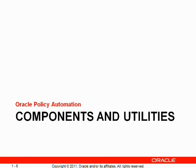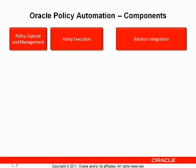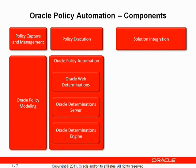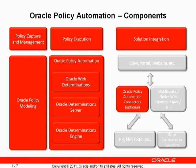Now we'll take a closer look at Oracle Policy Automation and its components and utilities. Oracle Policy Automation's solution provides products, components, and utilities which fully address the three aspects of policy automation systems: policy capture and management through Oracle Policy Modeling; policy execution through the Oracle Policy Automation runtime components; and solution integration, where a number of product-specific connectors are available to expedite integration with popular business applications.